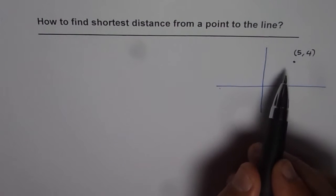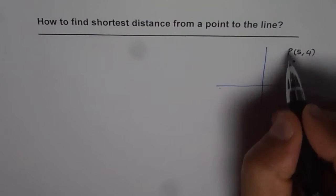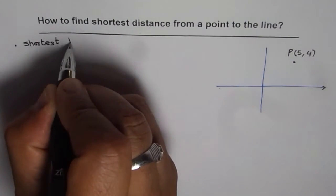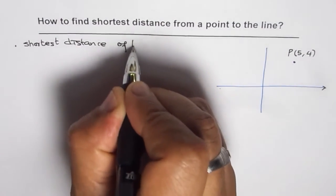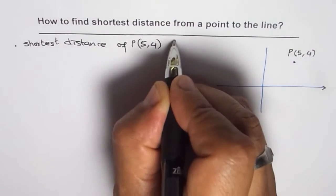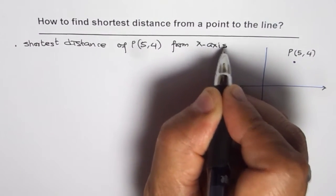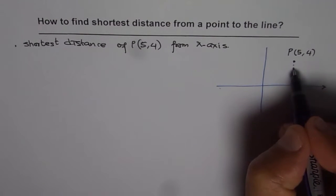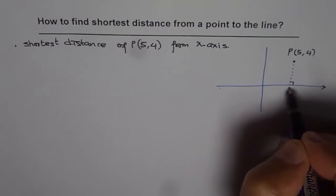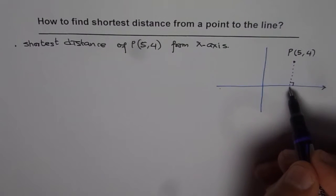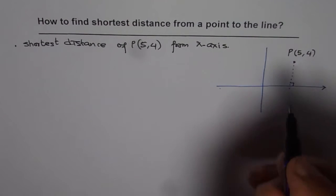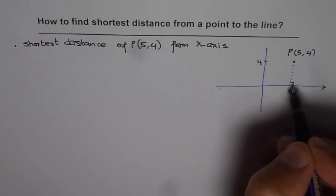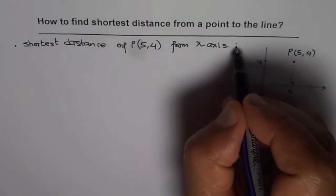Now let us first consider what is the shortest distance of this point — let us call this point P — from the x-axis. Let us find the shortest distance of P, which is (5, 4), from the x-axis. If we drop a perpendicular from this point, we get the shortest distance. The distance will be 4 units — the y value is 4, so the vertical distance, the y coordinate, is 4.